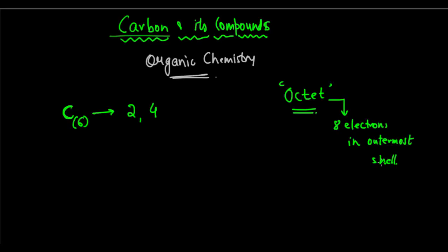Now to gain this stability, if it does not have this octet in its outermost shell, to gain it it can go for chemical bonding - it can form bonds - or it can also go for loss or gain of electrons. These are the two ways in which it can gain an octet.